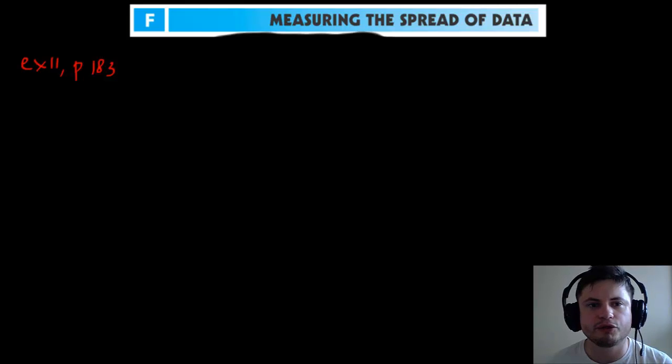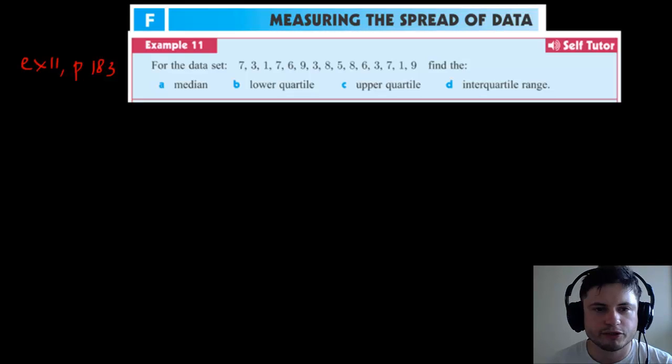We're going to use Example 11 on page 183. Here's the question: for the data set of these numbers, find the median, lower quartile, upper quartile, and interquartile range. This is a very common question, so make sure you understand what it says. To know interquartile range, we need to know lower quartile and upper quartile. These three values are actually related.